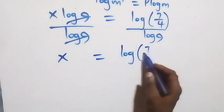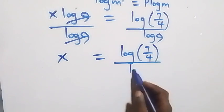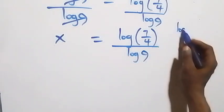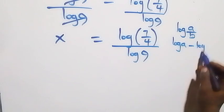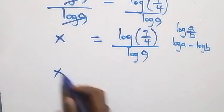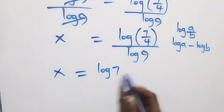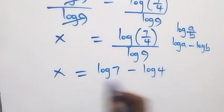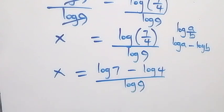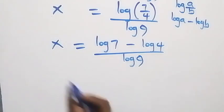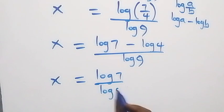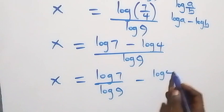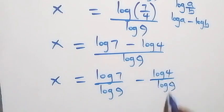We divide by log 9. Applying the law of logarithms — log a over b is the same as log a minus log b — we have x equals log 7 minus log 4 over log 9. Next step, we separate this into two fractions: x equals log 7 over log 9 minus log 4 over log 9.